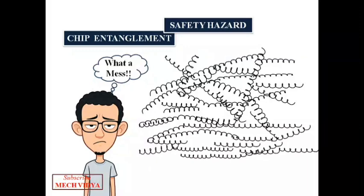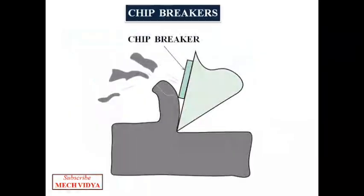For this purpose we use chip breakers. These are small additional parts welded to the rake face of the cutting tool. What it does is that as soon as the chip comes out, it hits the chip breaker, and due to this impact, the chip comes out as fragmented pieces instead of a long continuous coil type.